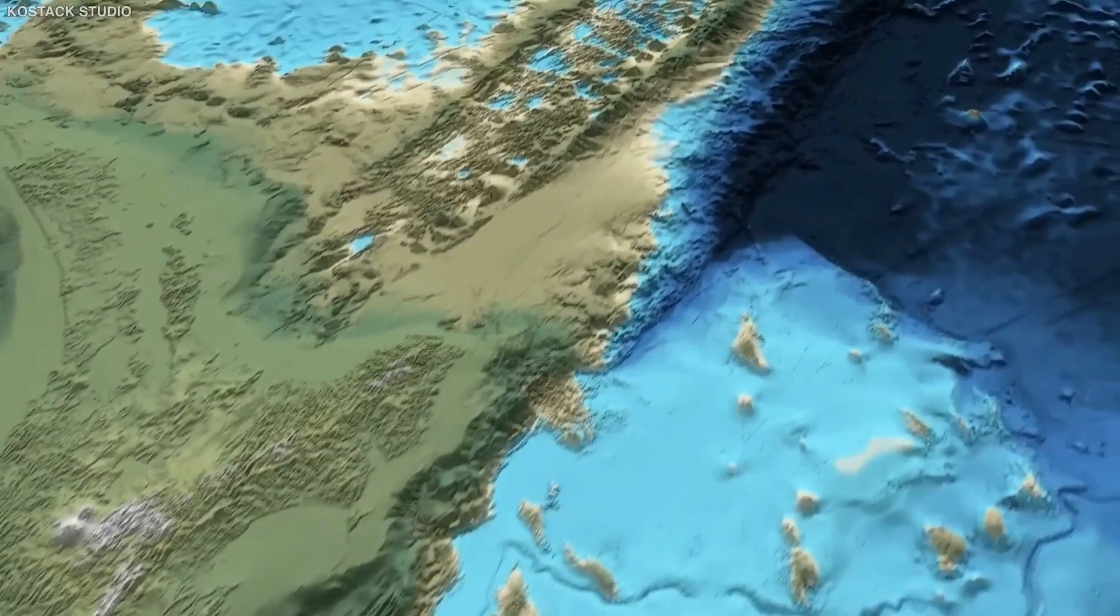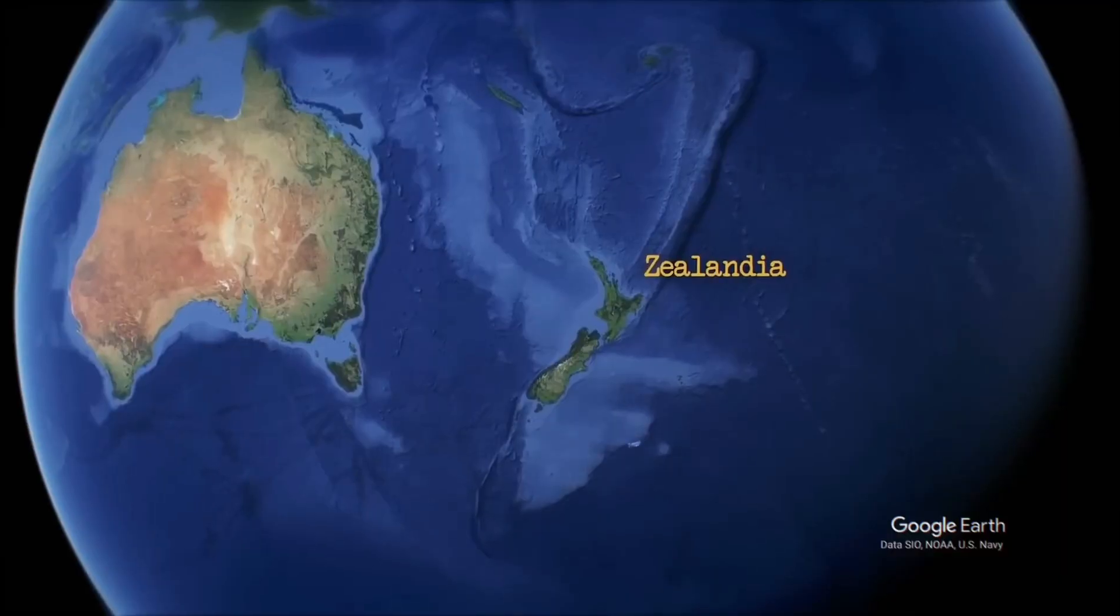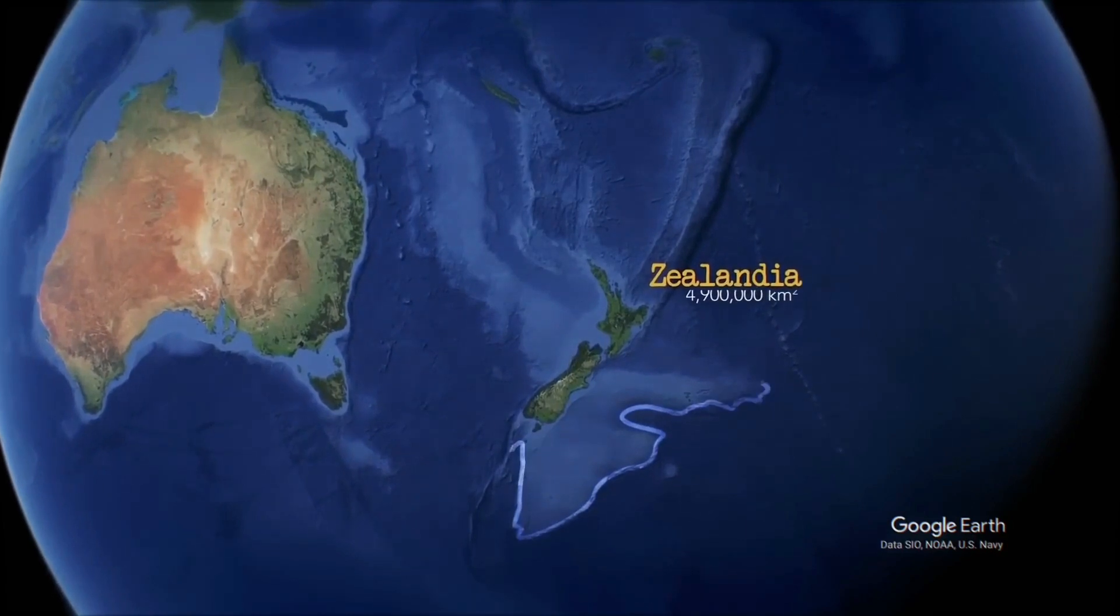Only a small number of islands, including New Zealand, protrude from the ocean's depth, making up 94% of them. However, that was only the beginning.